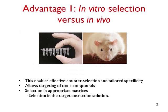Advantage 1. Aptamers are identified entirely in test tubes. There is no need for injection of animals. This allows us to customize selection strategies to optimize specificity. We can do counter-selection in the selection process against molecules that you do not want the aptamer to bind to. The all-in-a-tube approach enables the development of aptamers for toxic compounds that tend to kill rabbits.